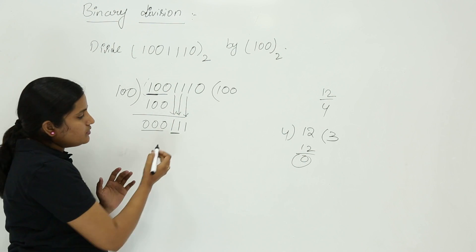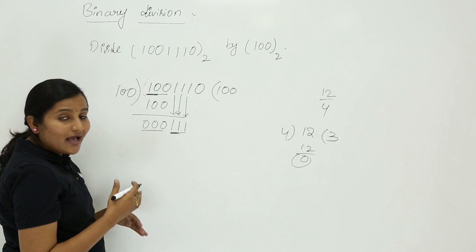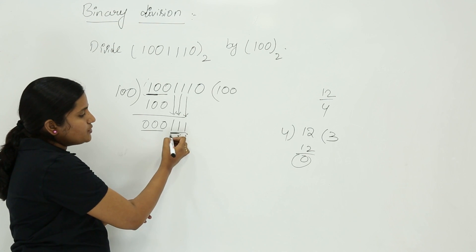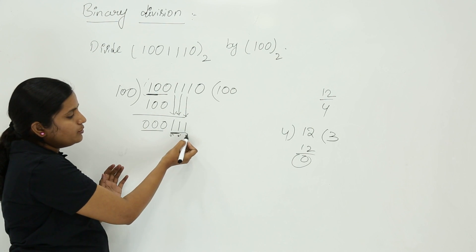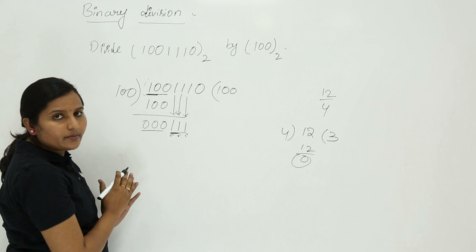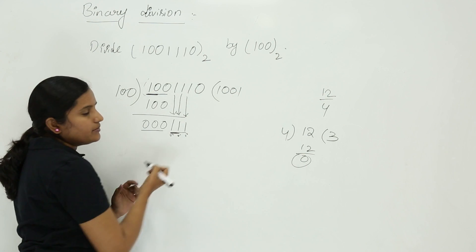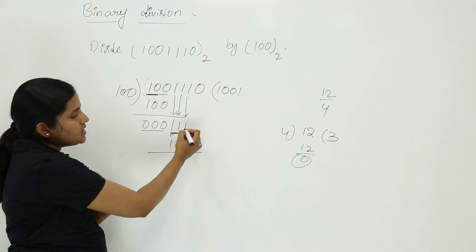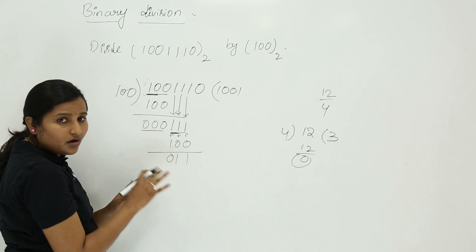Now you have one one one. The value of one one one is seven: two power zero plus two power one plus two squared equals one plus two plus four equals seven. Seven is greater than four, so we can perform division. Four goes into seven one time — I take one here and subtract one zero zero. One minus zero is one, one minus zero is one, one minus one is zero, leaving zero one one.